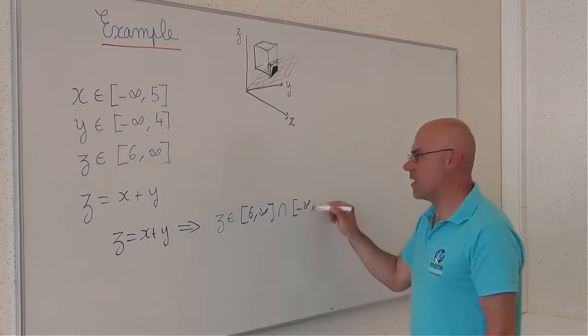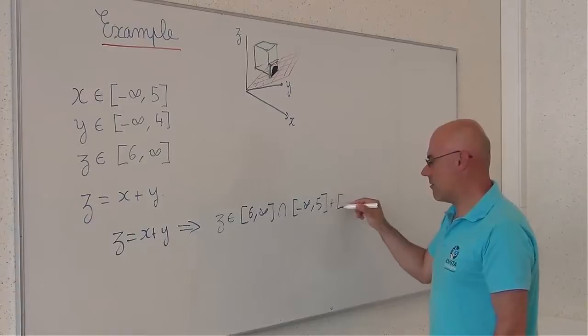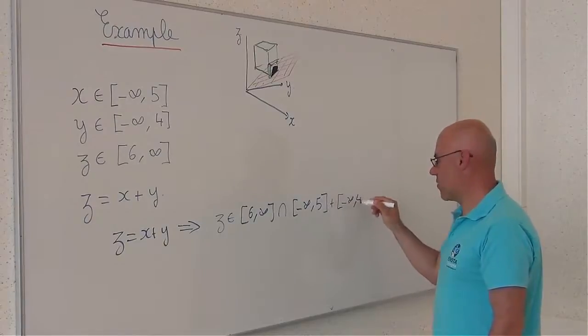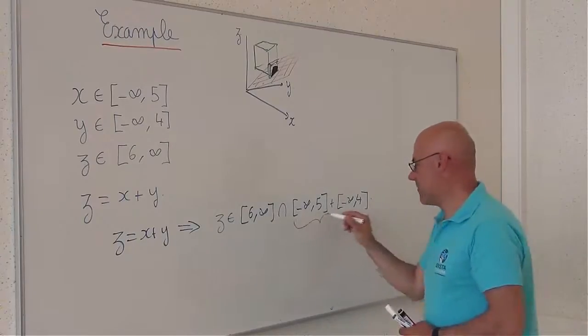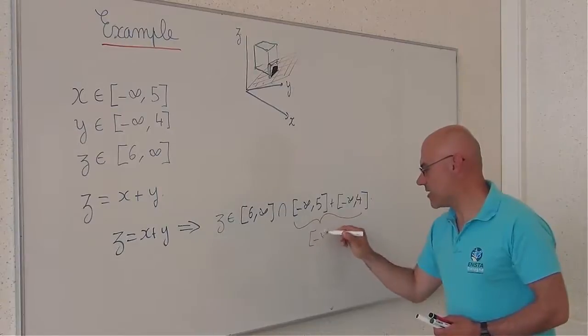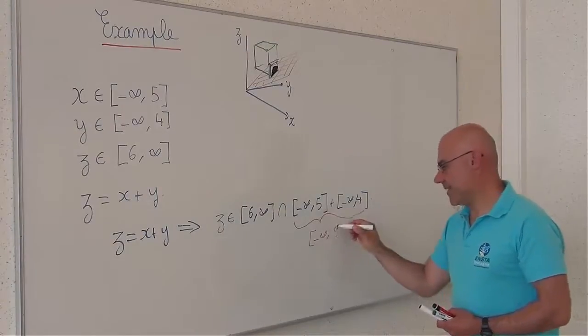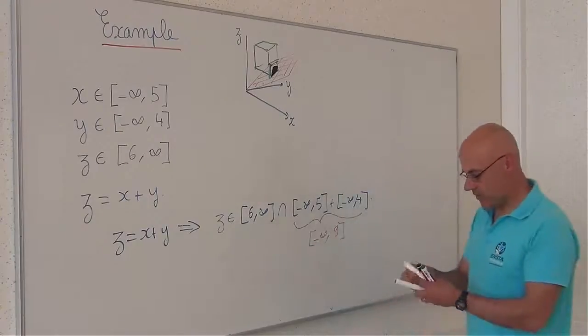So minus infinity, 5 plus minus infinity, 4. If I add these two intervals, I will obtain minus infinity, 9. When I will intersect these two intervals, I will obtain 6, 9.